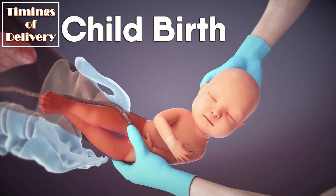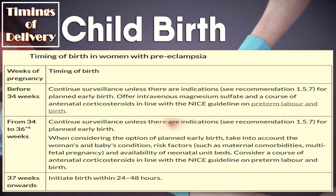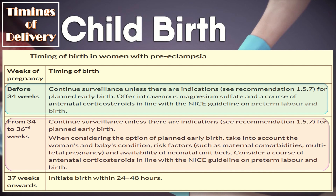Regarding timing of delivery: if the patient presents before 34 weeks with preeclampsia, continue surveillance unless there are indications for planned early birth. From 34 to 36 weeks, also continue surveillance unless there are indications for planned early birth, taking into account the woman's and baby's condition, risk factors, and availability of neonatal unit beds. From 37 weeks onward, initiate birth within 24 to 48 hours.